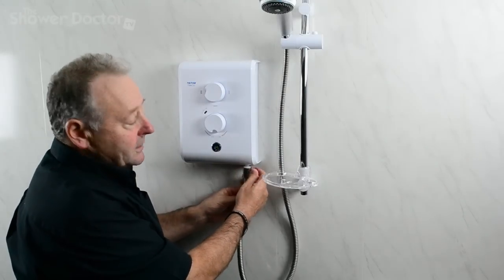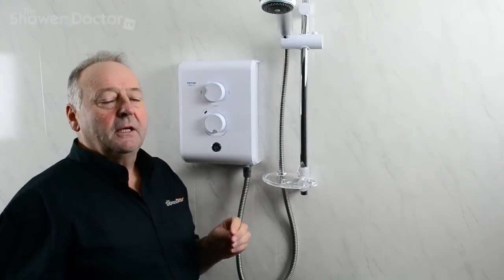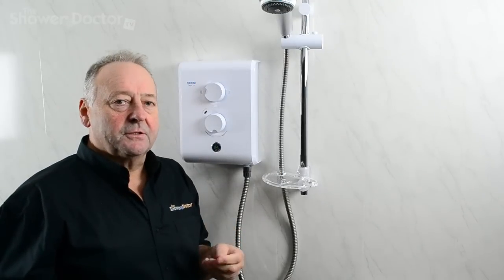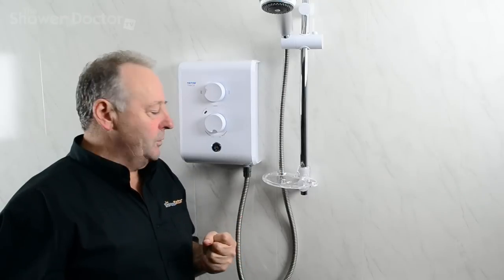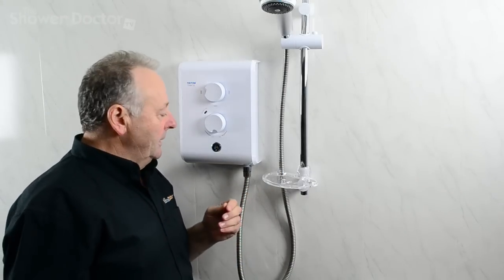One of the things you have to be very aware of with the shower hose is it's always best to try and get the manufacturer's original equipment. Although the hoses all look the same, they are very different. I'll let you see.